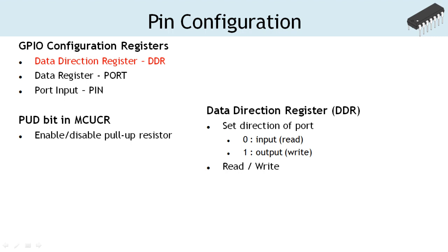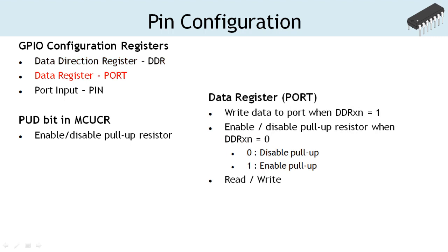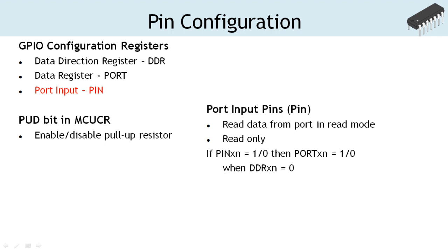The data direction register is used to configure the GPIO port in input or output mode. Logic 0 sets the port in input mode and logic 1 in output mode. The data direction register is a read-write register. The data register is used to write data to a port when it is configured in output mode. In input mode, the port register is used to enable or disable the pull-up resistor. Logic high enables the pull-up resistor and logic low disables it. The port register is a read-write register.